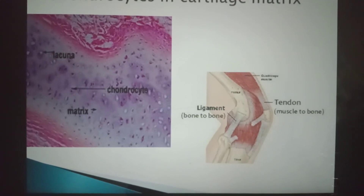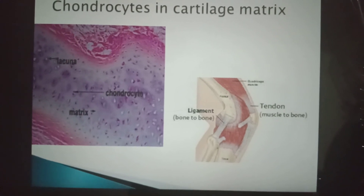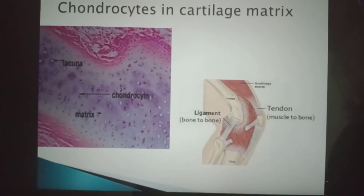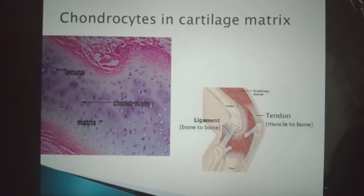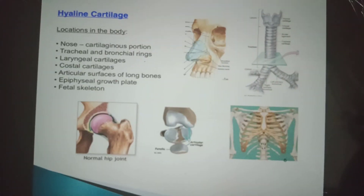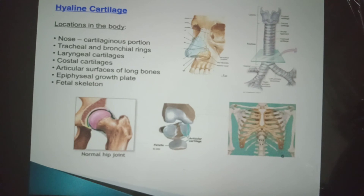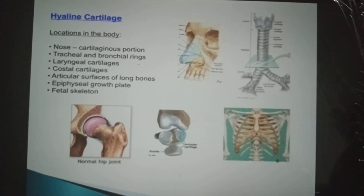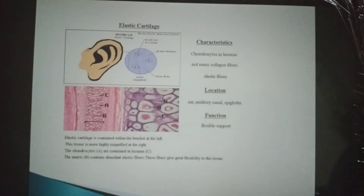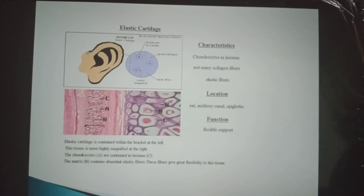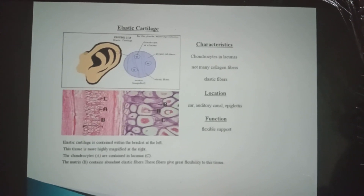Here you can see the ligament, which is the connection between bone to bone, and the tendon, which is the connection between muscle to bone. I discussed hyaline cartilage, found in the nose and tracheal system, and elastic cartilage, found in the pinna.